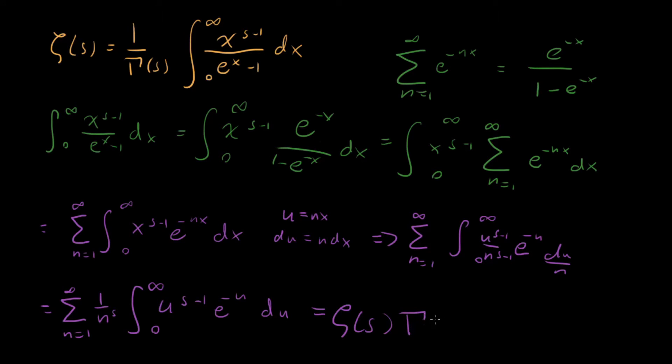And so we've done it. We've proven that starting with this integral up here, by using some trickery, you know, rewriting things in terms of a geometric series, and then using some change of variables, we were able to start from this integral and end up with the result we wanted. And so we've done it. We've derived an integral representation for the Riemann zeta function.